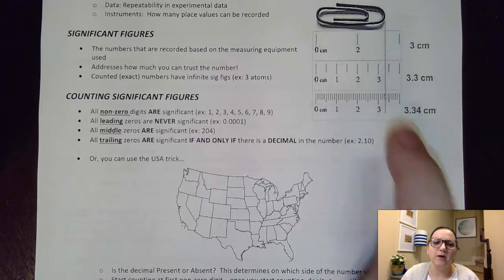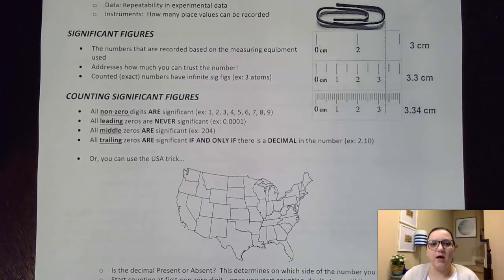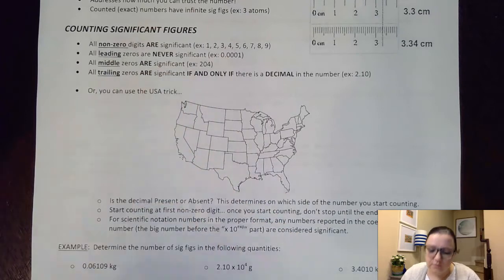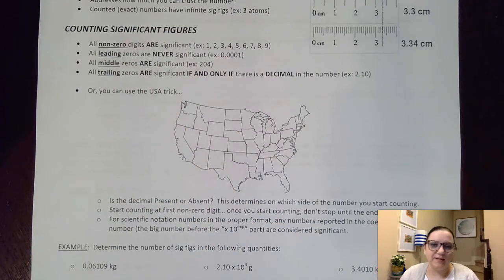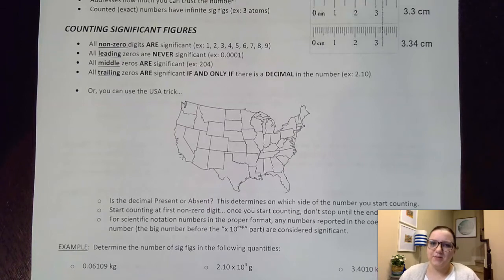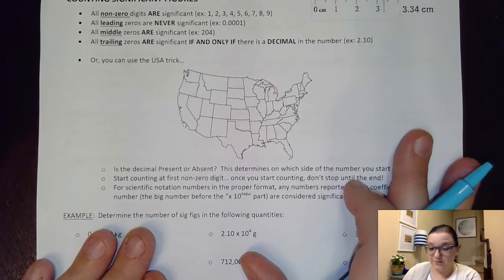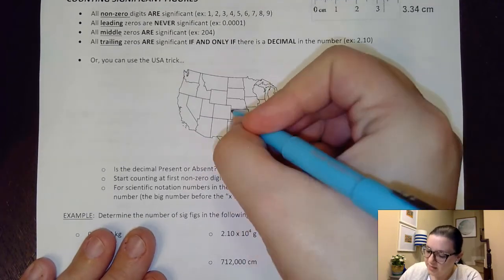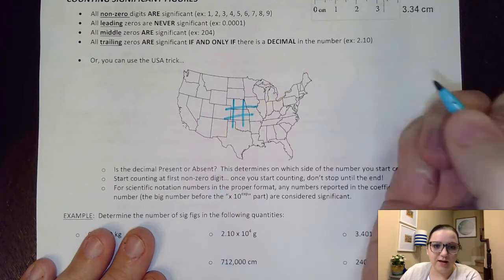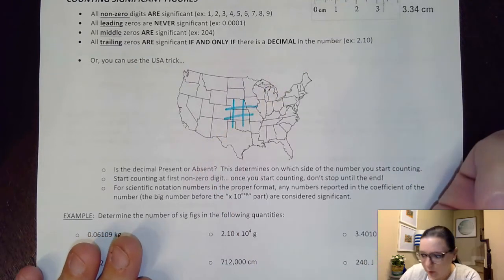We'll talk more about equipment in just a little bit. First I want to talk about how do I count the number of significant figures if I'm already given a value. I always use the United States trick to count significant figures. How the United States trick works is you pretend that the United States is your number — and that's not a hashtag, but rather a number.